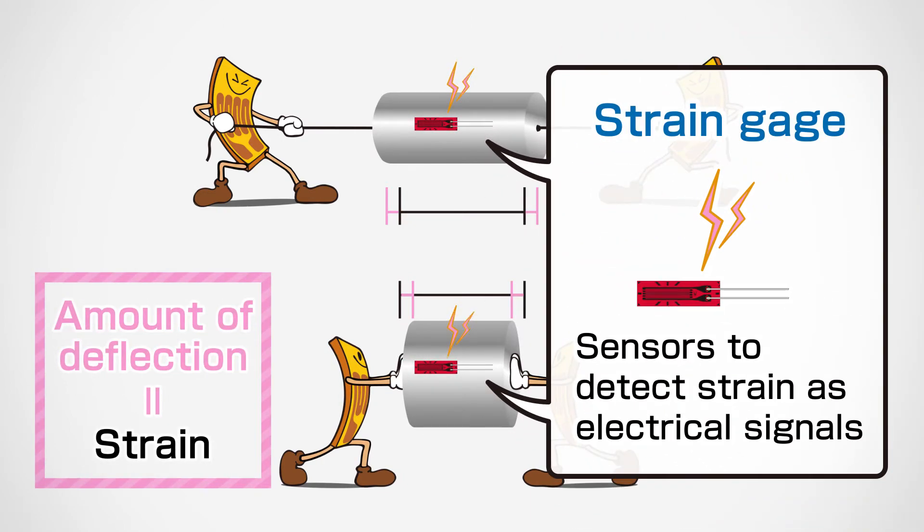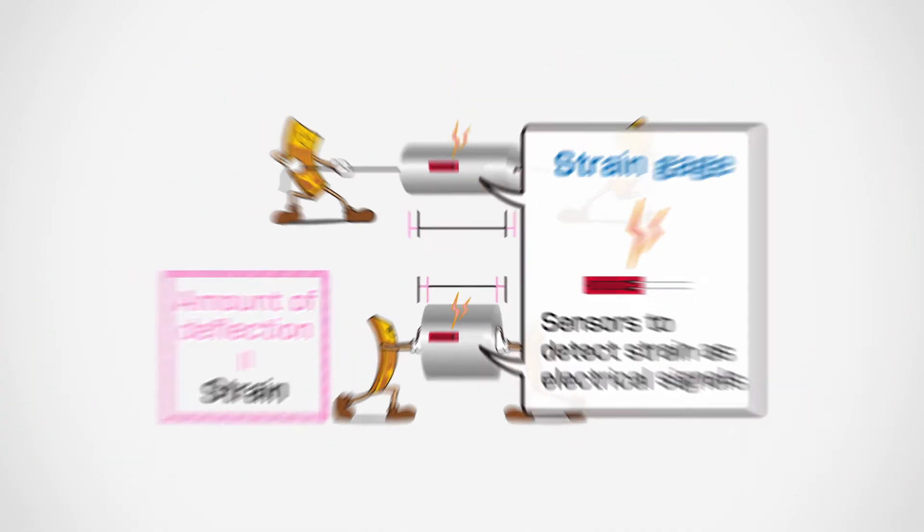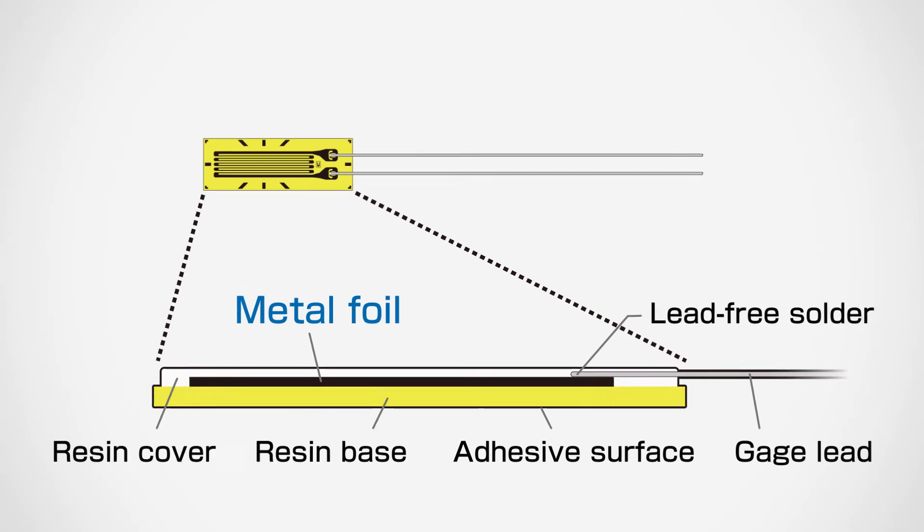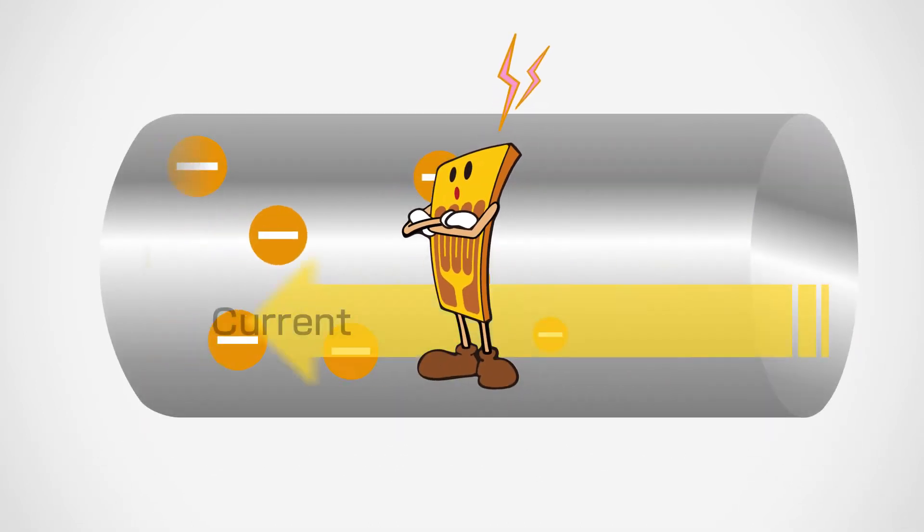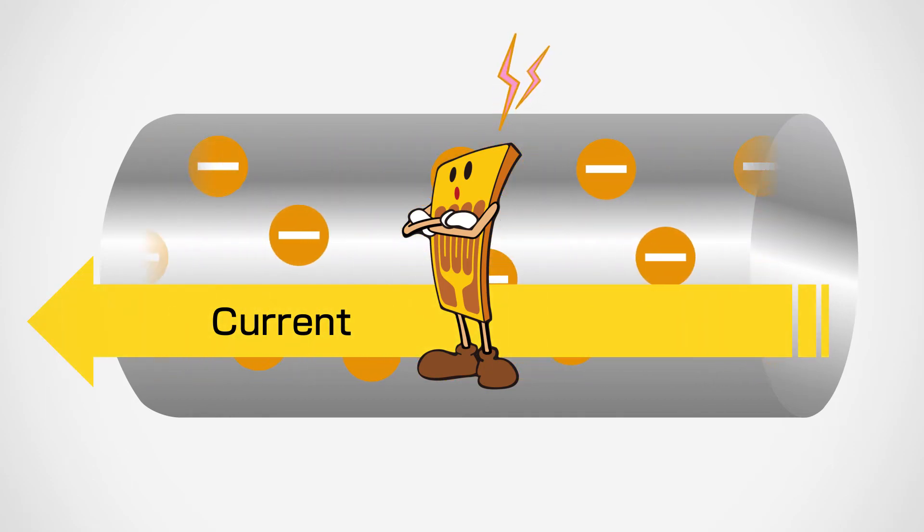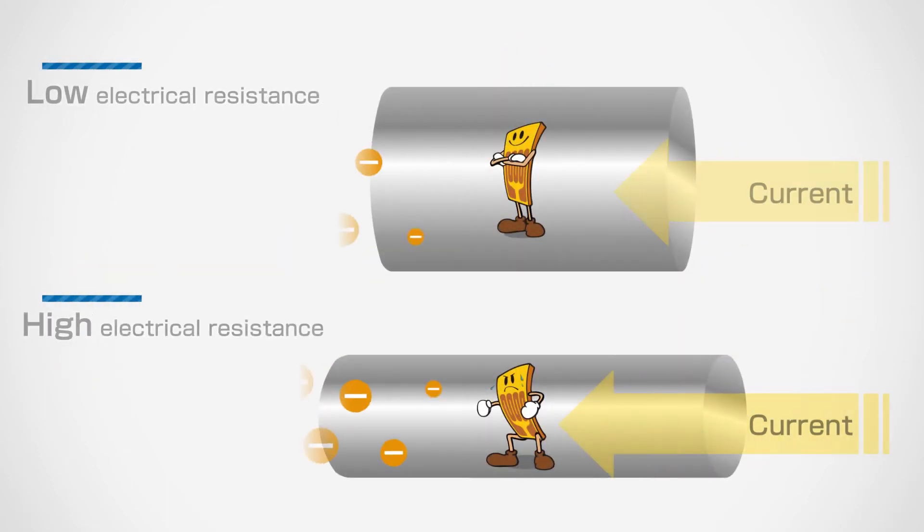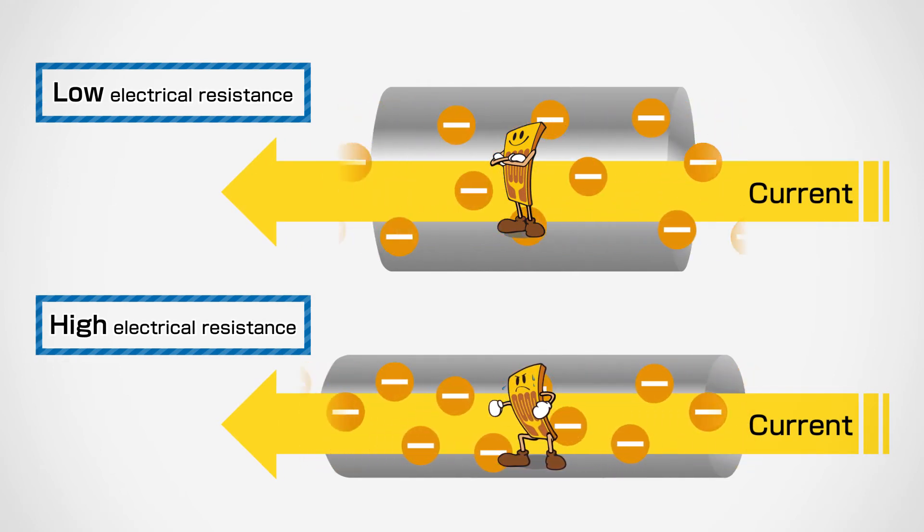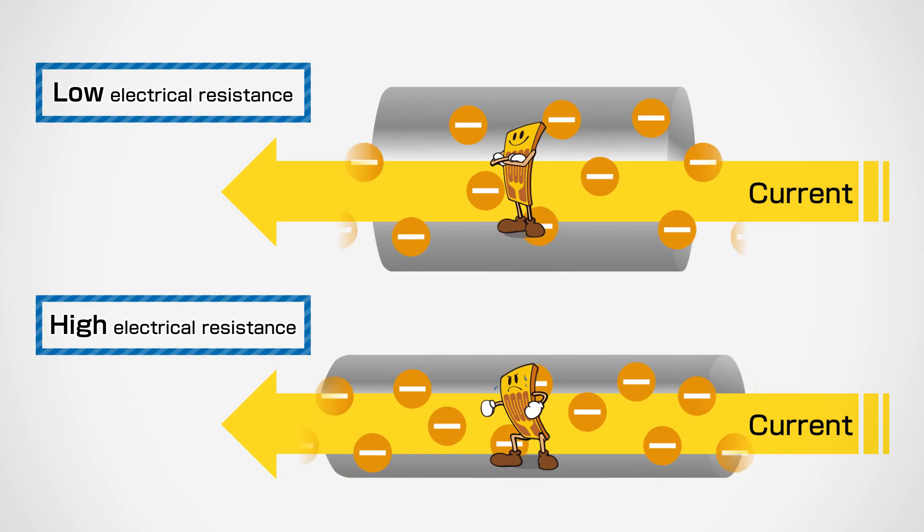Strain gauges are sensors that detect this strain as an electrical signal. The strain gauge sensor is made of a metal foil and its electrical resistance can be measured when passing a current through. The metal deforms when external forces are applied and this increases or decreases the resistance value. These characteristics are used in strain gauges.